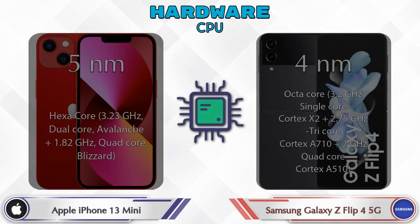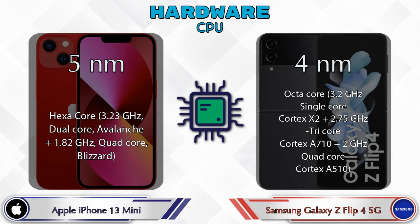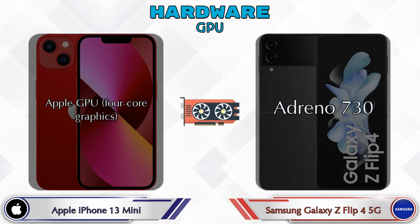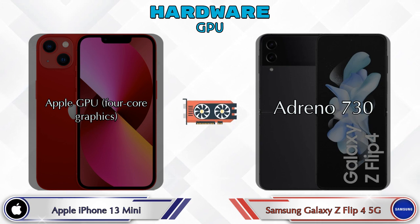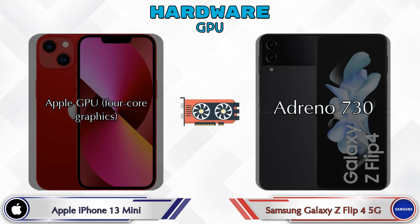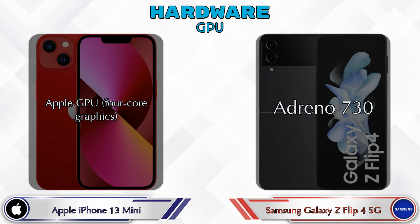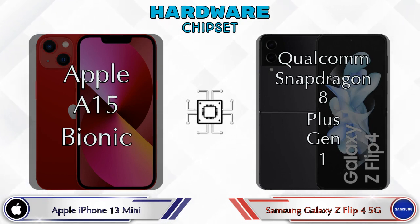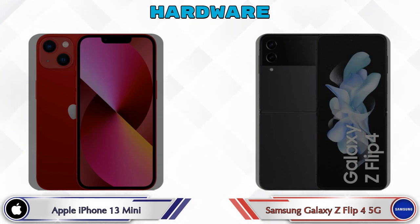First, let's look at the most important part of the phone: hardware. Talking about GPU, the iPhone 13 Mini has Apple GPU four-core graphics and the Z Flip 4 5G has Adreno 730. For chipset, the iPhone 13 Mini has Apple A15 Bionic and the Z Flip 4 5G has Qualcomm Snapdragon 8 Plus Gen 1.